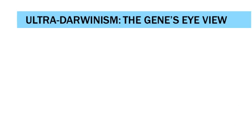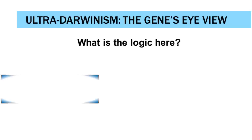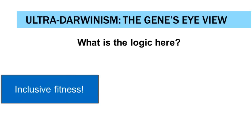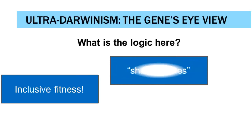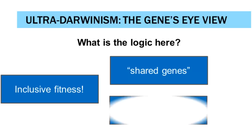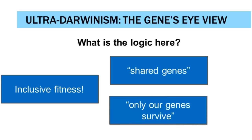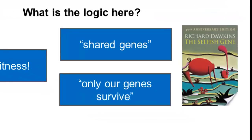Ultra-Darwinism, as it came to be called, takes the gene's-eye view of selection. The logic is based on Hamilton's principle of inclusive fitness — in focusing on shared genes and their transmission, we shift away from the individual as the unit of selection. We come to see that it's only our genes that survive and reproduce. This is the position that Richard Dawkins famously developed in The Selfish Gene — not really about selfishness at the genetic level, but an argument that the proper level to focus on is not the individual, but the even more fundamental level of the gene.